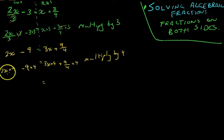So, 2x times 4 is 8x minus 9 times 4 is minus 36. 3x times 4 is 12x.